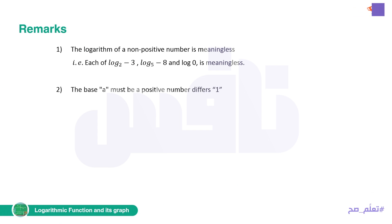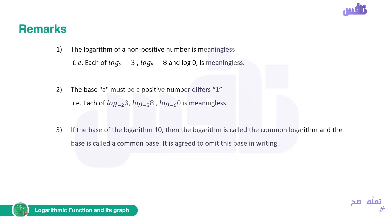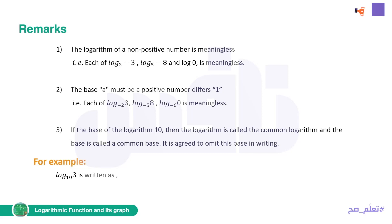Second remark: the base a must be a positive number that differs from 1. It cannot be 1 and cannot be a negative number. So log base negative 2 of 3 and log base negative 5 of 8 are both meaningless. Third remark: if the base of the logarithm is 10, it is called the common logarithm and the base is omitted in writing. For example, log base 10 of 3 is simply written as log 3.